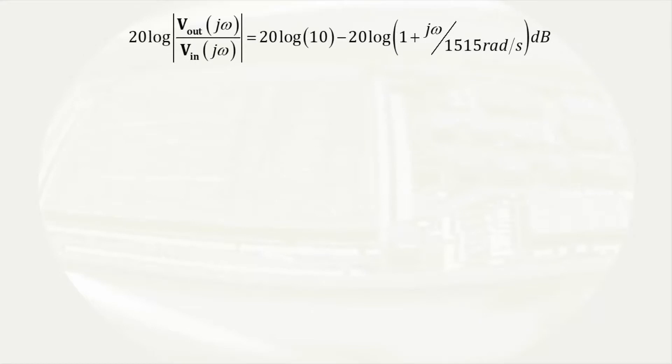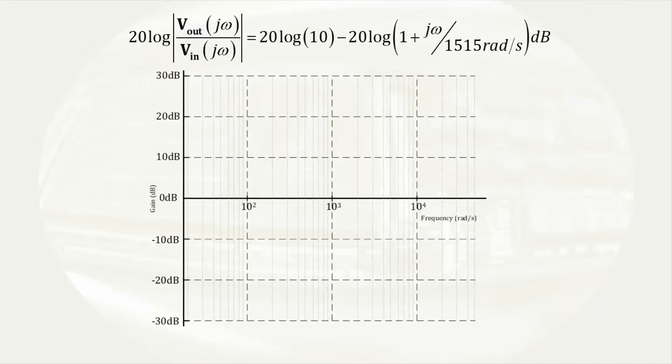We will graph the 20 log 10 term. There is no frequency dependence and the term has a magnitude of 20 decibels, so it will contribute a constant line at 20 decibels.